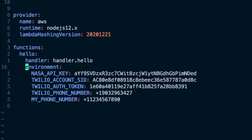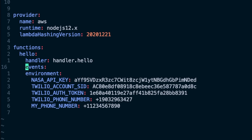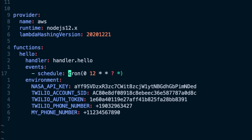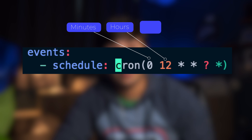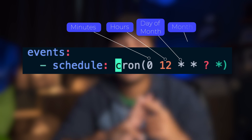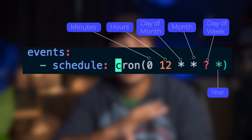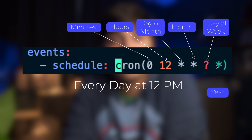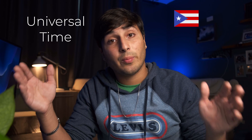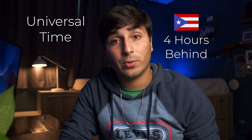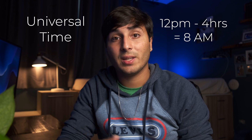The next step is to set up an event that will trigger this function. I want this to run at 8am every morning Puerto Rico time, which is where I live. In the serverless.yaml file we'll add an events list, specify that our event will be a schedule, and define the schedule using cron syntax. Cron is a standard way of specifying a schedule: the first value is minutes, the second is hours, the third is day of the month, the fourth is month, the fifth is day of the week, and the last is year. We're setting the function to run every day at 12pm UTC — universal time, a single source of truth for time across the world. Since Puerto Rico is four hours behind UTC, our function will actually run at 8am, which is what we want.